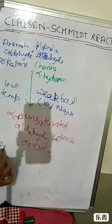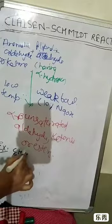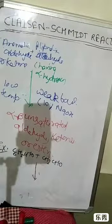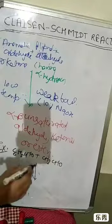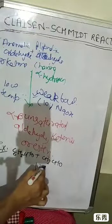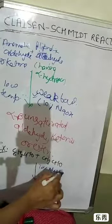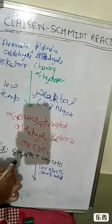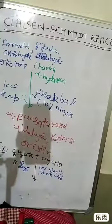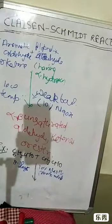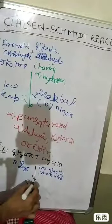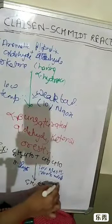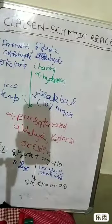This is known as the Claisen-Schmidt reaction, or simply the Claisen reaction. For example, C6H5CHO reacts with CH3CHO in the presence of 10% NaOH — weak base — at room temperature for 8 to 10 days, and we get C6H5CH=CHCHO. This product is cinnamaldehyde.